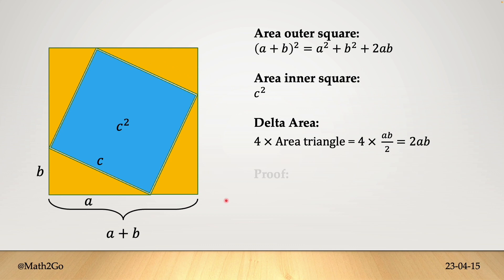With all of this preparation done, we can formulate the proof in just one step. The area of the outer square equals the area of the inner square c² plus four times the area of one singular right triangle. We have a² + b² + 2ab for the outer square.